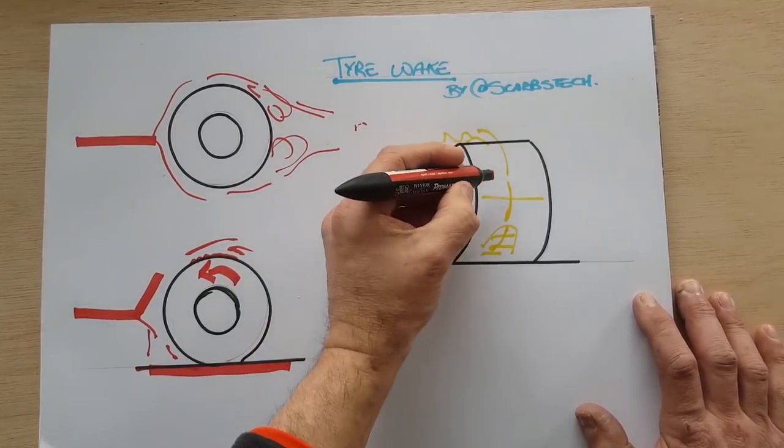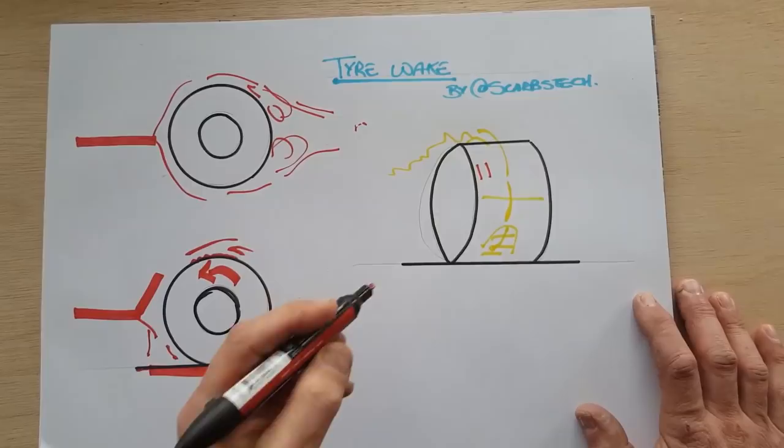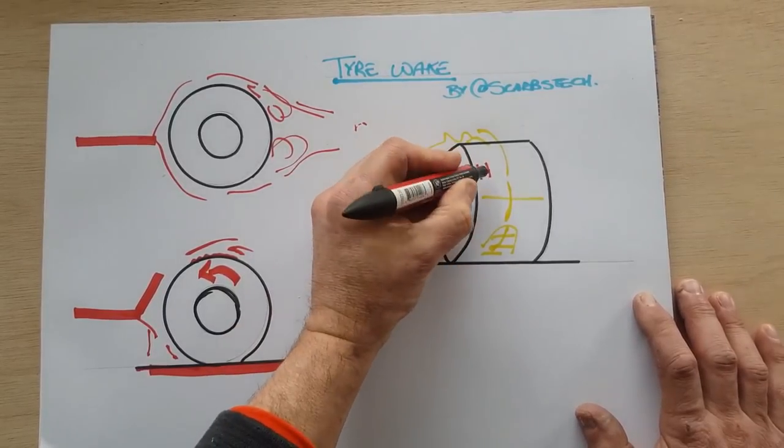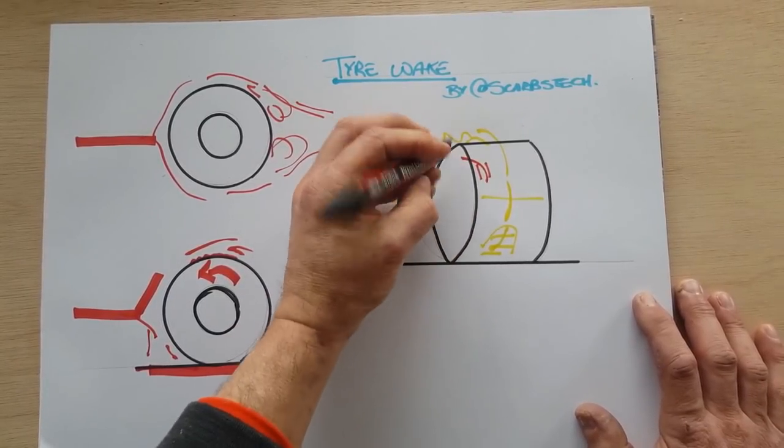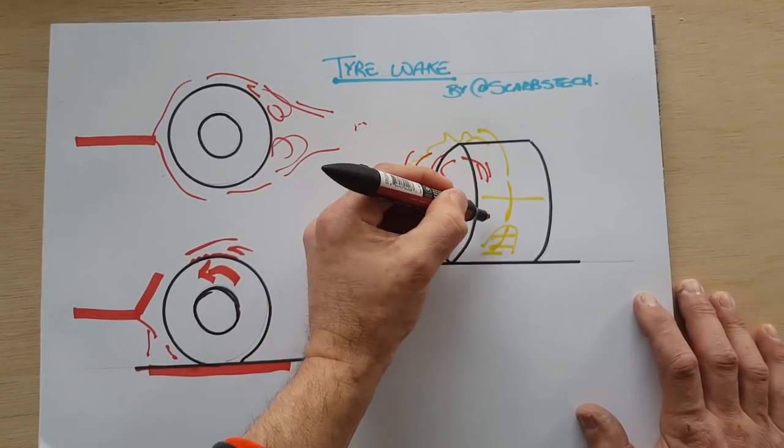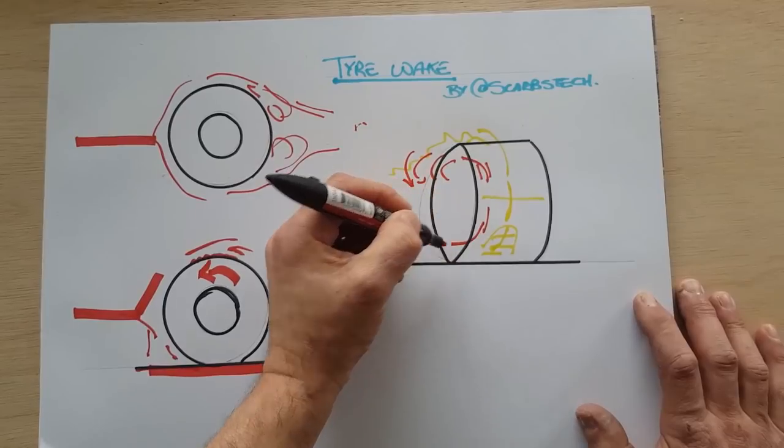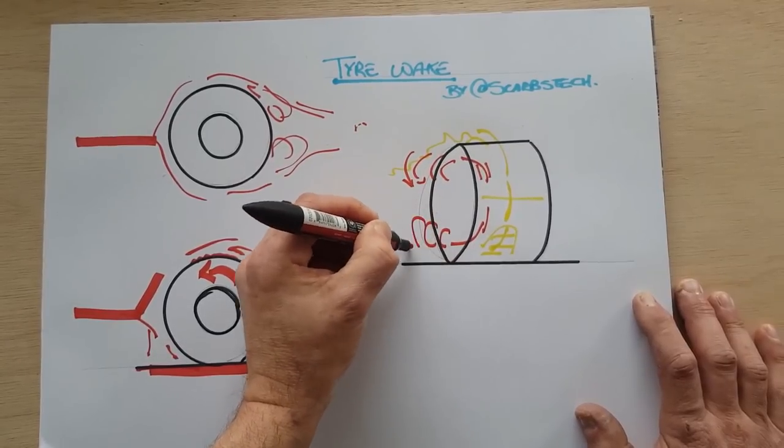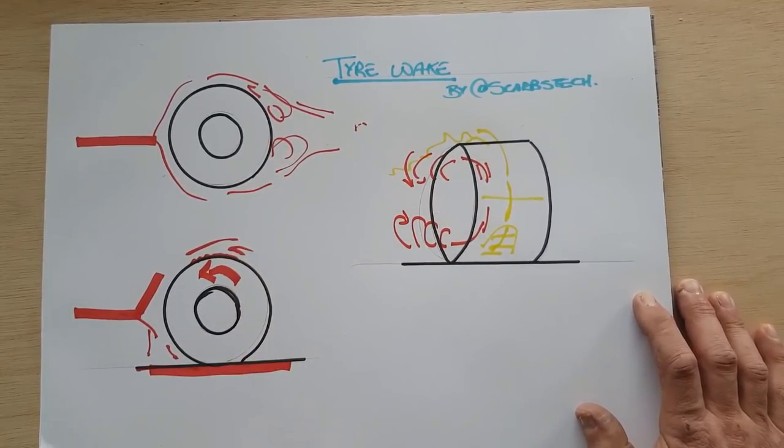So if we think of the airflow that's now hitting the tire around this aspect of the tire, it wants to spill off and it then creates a vortex going like this. Likewise, air hitting here wants to spill off and again creates a vortex spinning down the side of the tire.